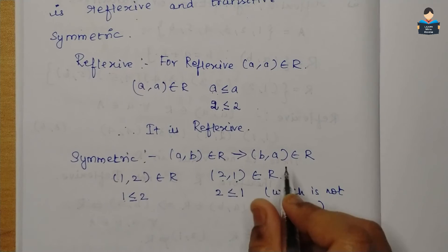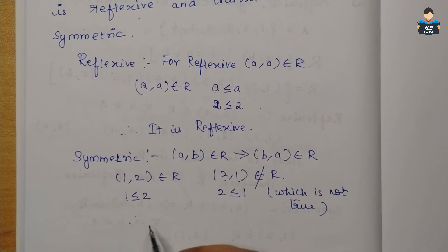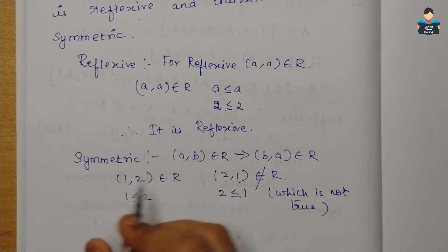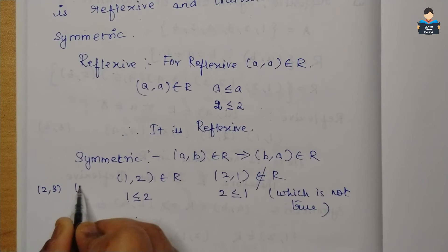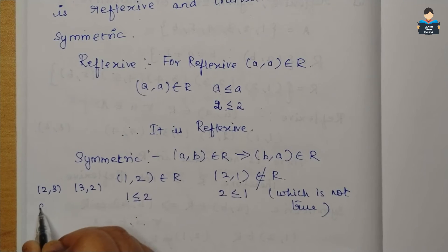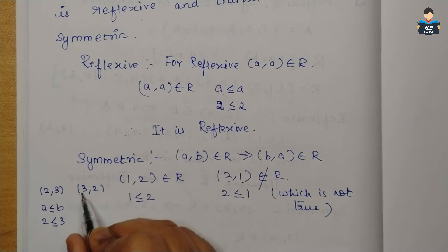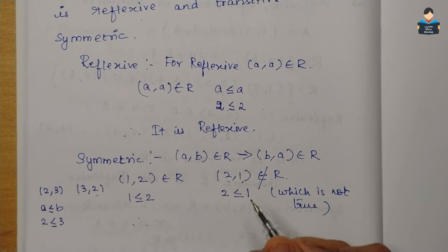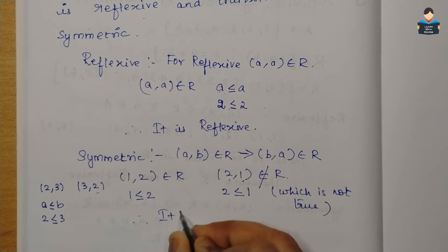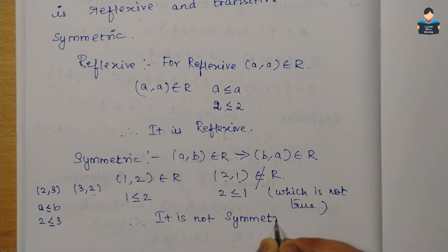But now check (2,1): 2 is less than or equal to 1, which is not true. So (2,1) does not belong to R. Therefore, one condition is not satisfied — this is not symmetric.